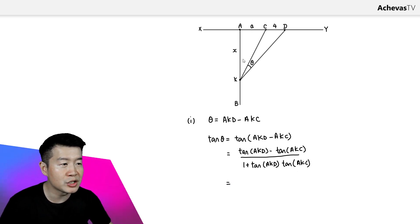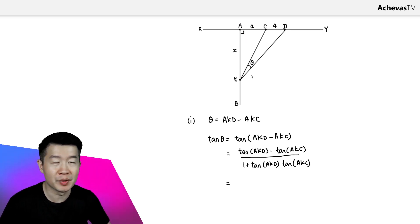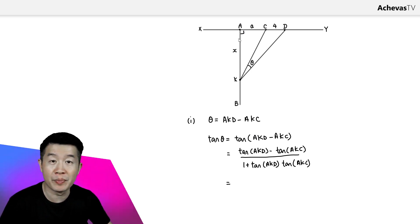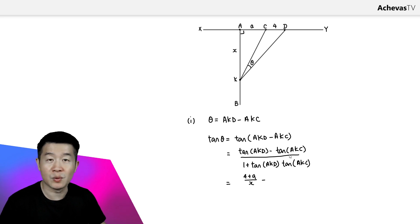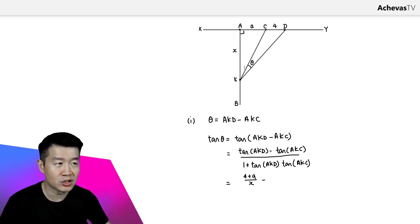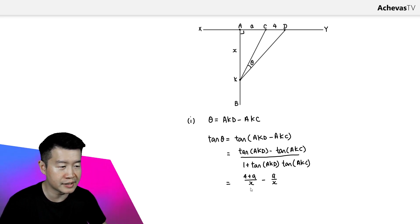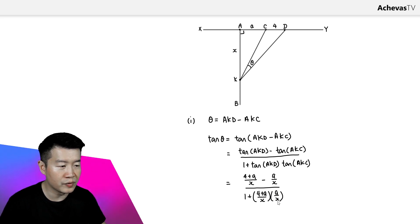Since AB is perpendicular to XY, there is a right angle here, so tangent of angle AKD is opposite over adjacent, which will be (4 + a) divided by x. Then, minus tangent of angle AKC: using the other right angle triangle, that is a over x. This is divided by 1 plus (4 + a)/x multiplied by a/x.